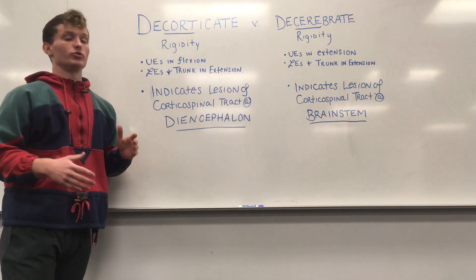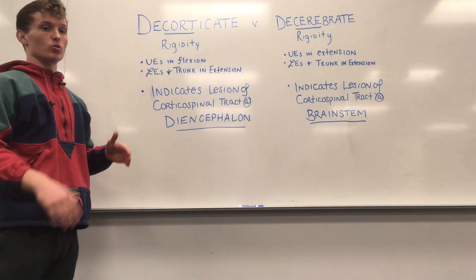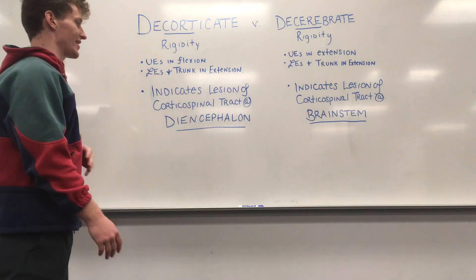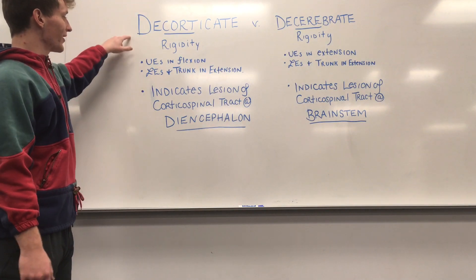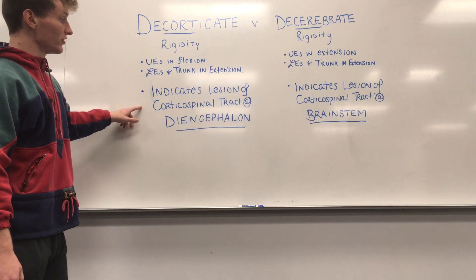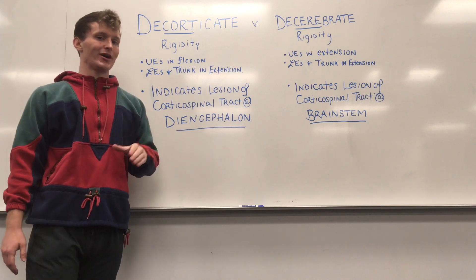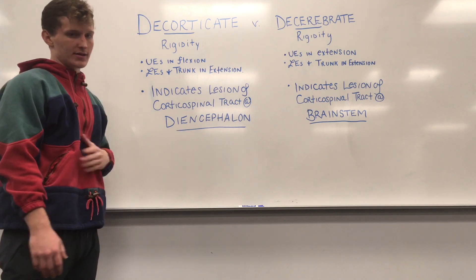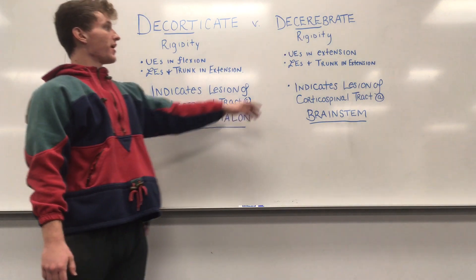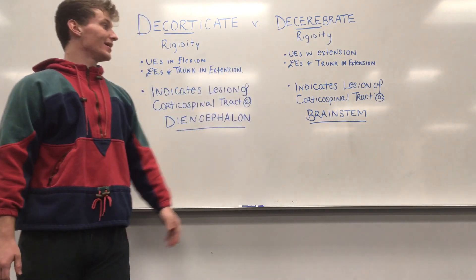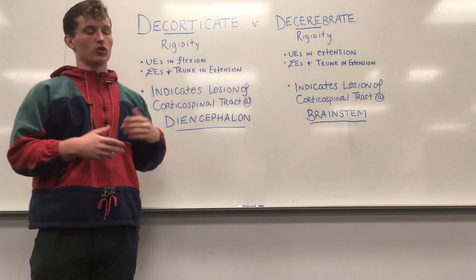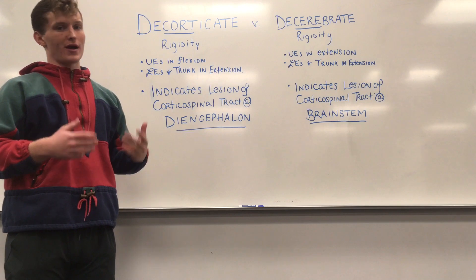So now what we're moving on to is where that lesion is at — what level. With decorticate, it is an indication of a lesion of the corticospinal tract at the diencephalon. Decerebrate is an indication of a lesion of the corticospinal tract as well, but this time at the brainstem.